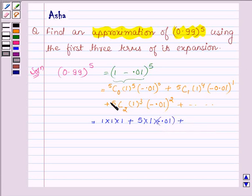Plus 5C2 is 10, 1 raised to the power 3 is 1, and minus 0.01 raised to the power 2 equals plus 0.0001, plus so on.